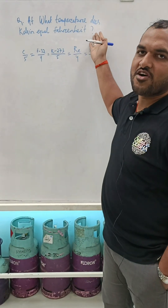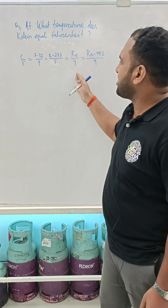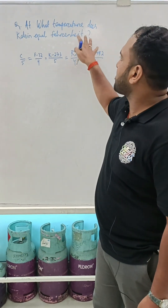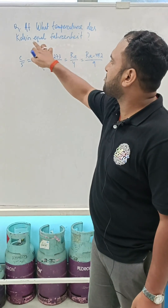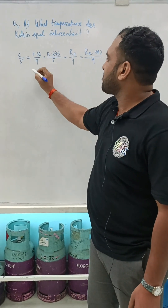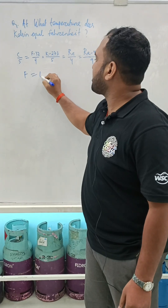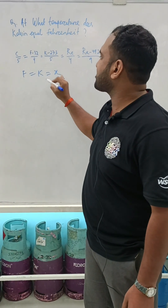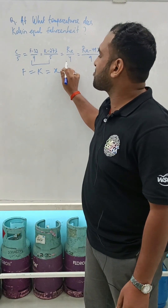In order to solve this kind of problem, there is a specific formula. In this question, it is asked: at what temperature will both Kelvin and Fahrenheit be equal? So, Fahrenheit and Kelvin are both equal — let's say this value is X. You have to consider these two terms only.